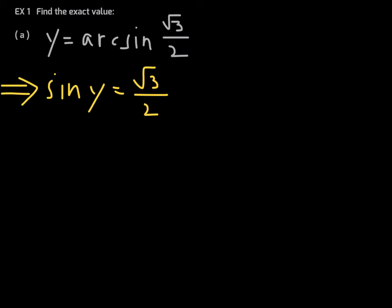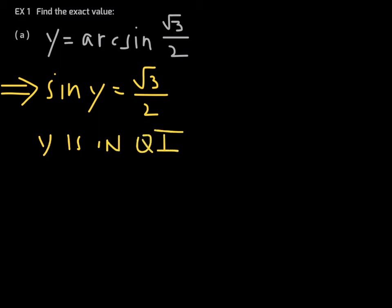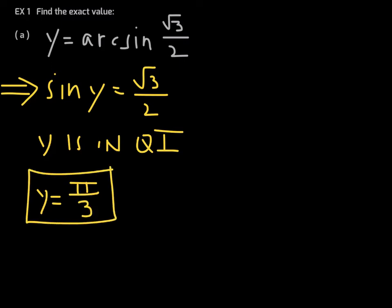Because we know our unit circle so well, we know that y must be π/3. Pi over three is the angle whose sine value is √3/2. There is another angle on the unit circle whose sine is √3/2 — that is 2π/3 — and sine of 2π/3 is also positive √3/2.